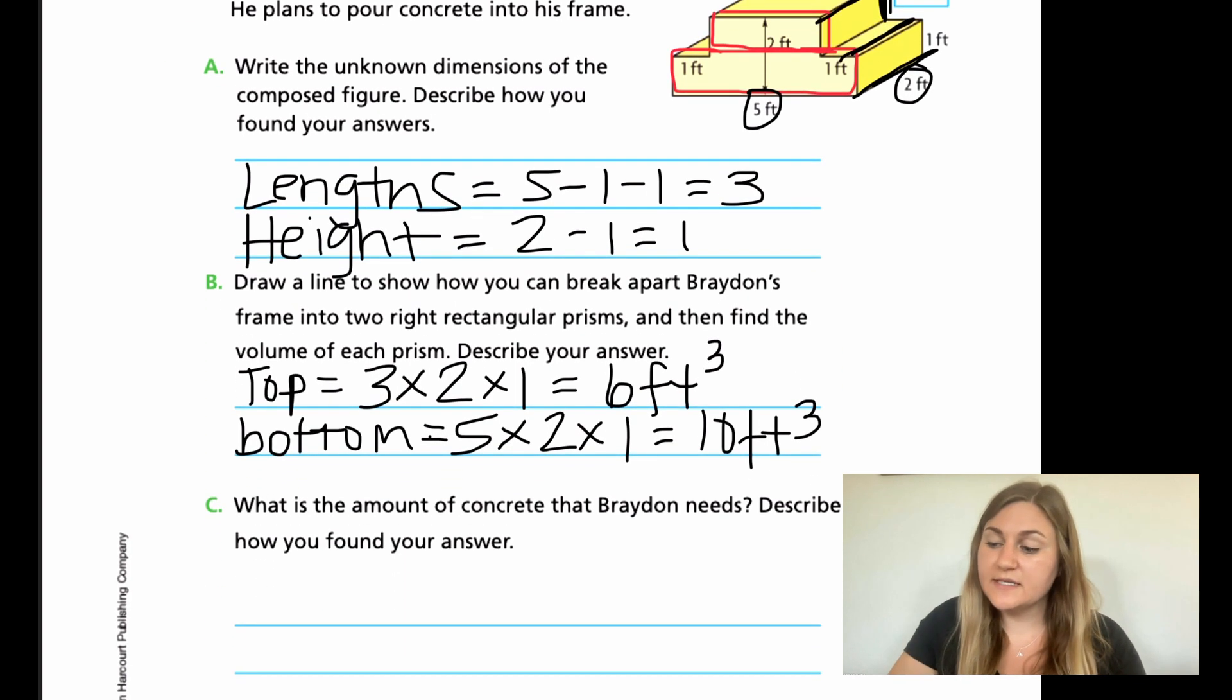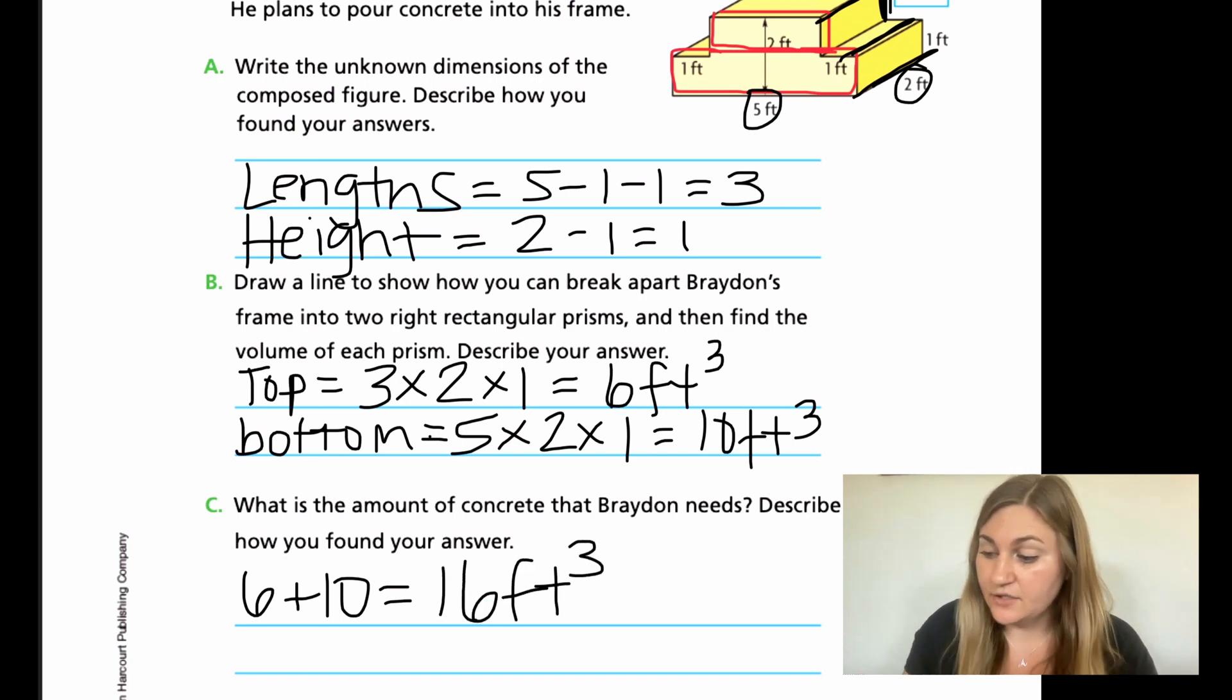See, what is the amount of concrete that Braydon needs. Here's where a lot of students that I've taught in the past get a little bit confused. They find their six and they find their 10 and they turn in their answer. That actually isn't correct. You forgot the very last step, which is putting them back together, finding those two pieces and adding them together to find the total area of our odd composed shape. So what we need to do is we need to combine our top and our bottom. If our top was six and our bottom was 10, that means our total volume for the composed figure is going to be 16 feet cubed. And describe how you found your answer. I'm just going to say that I combined top and bottom.